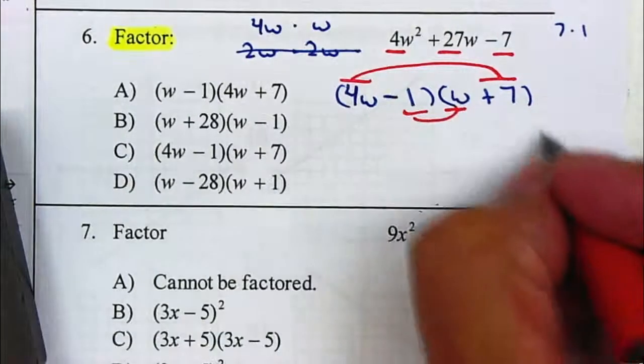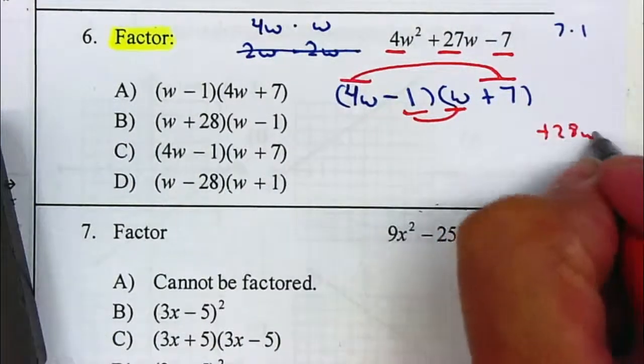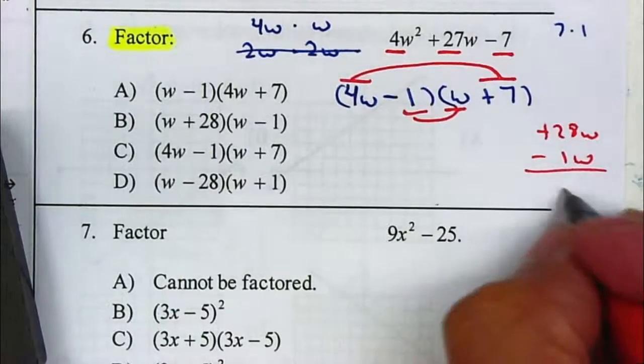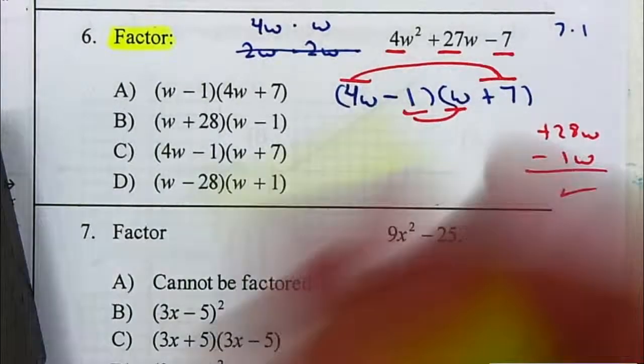Because if I multiply together it gives me a positive 28W and negative 1W. That is, does it add up to 27W? In this case, it does.